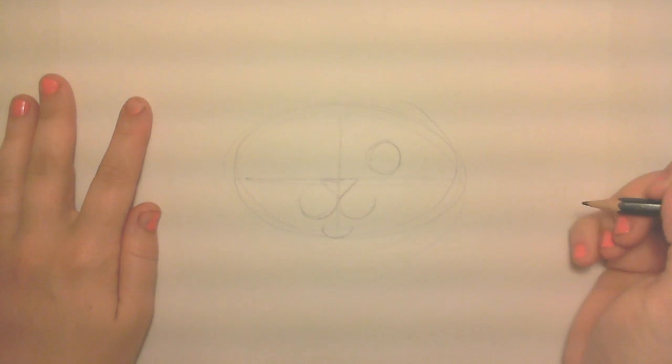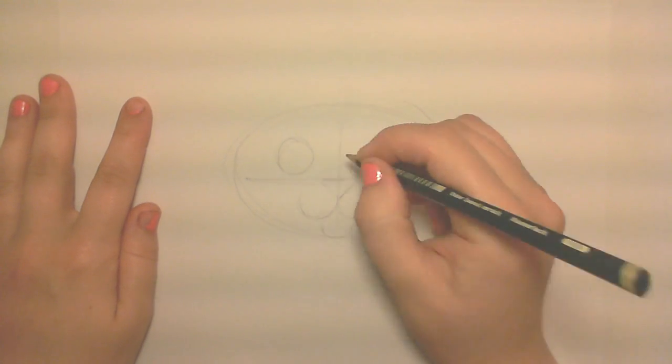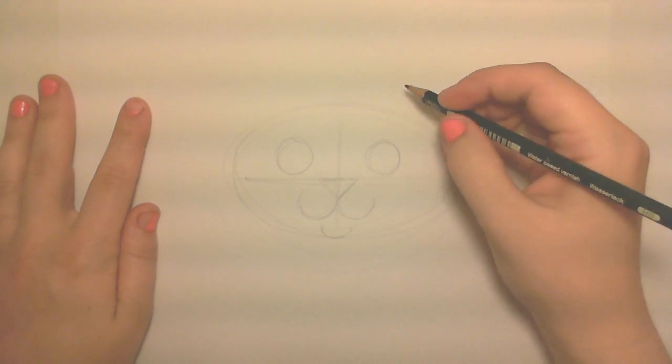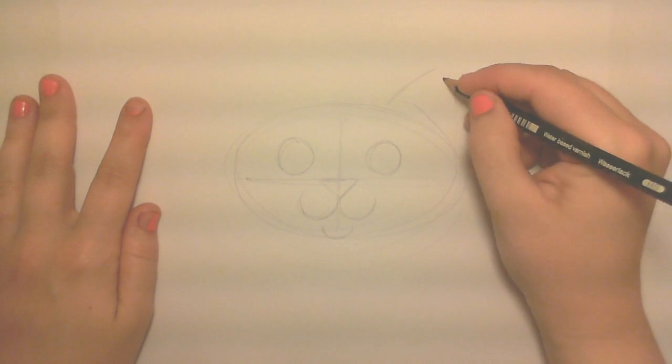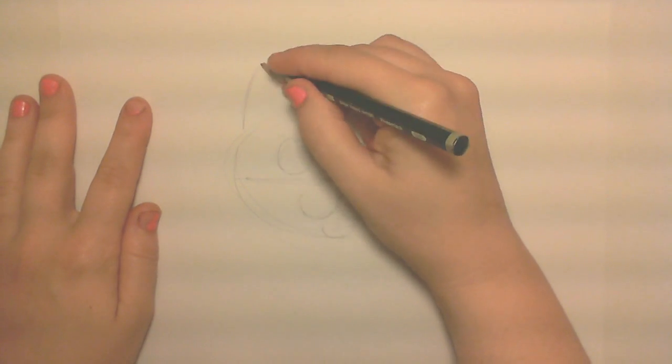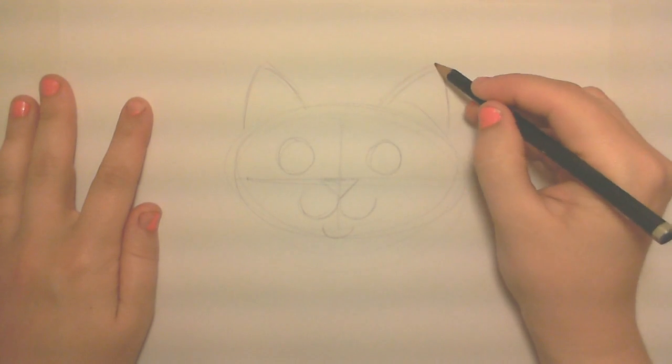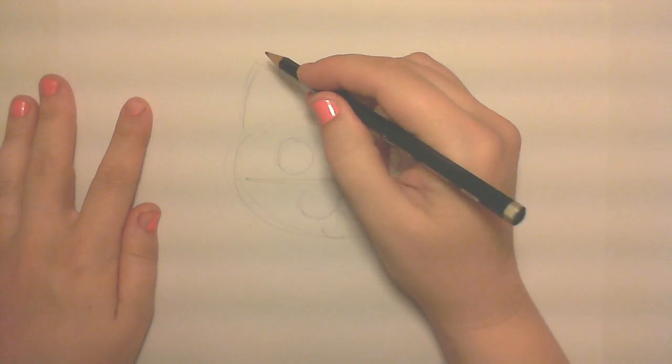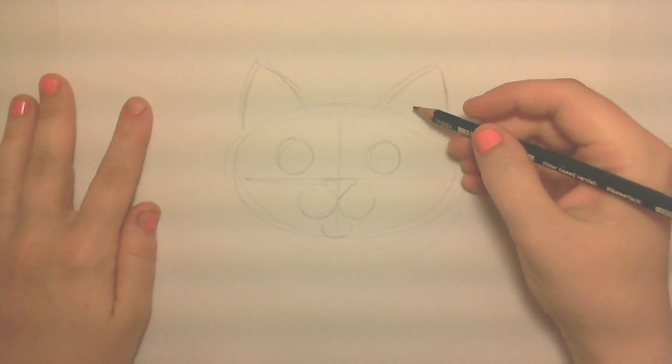And then two loose circles on each side of the face for the cat's eyes. For the ears, just on each side of the top of the cat's head, you're going to draw kind of a rounded triangle shape. So there we go. It already starts to look like a cat.